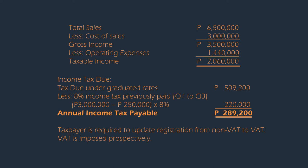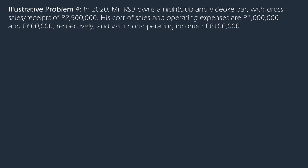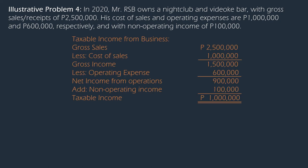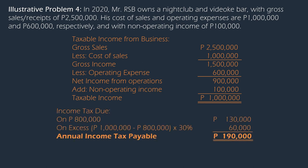Note that VAT shall be imposed prospectively. If the taxpayer is already VAT registered at the beginning of the year, then only the graduated tax rate shall be used in computing income tax due. For our last illustrative problem, the taxpayer cannot avail of the 8% income tax rate because of the peculiarity of the business, which is subject to other percentage tax under Section 125 at 18% based on gross receipts. Take note also of the nature of the $100,000 other income — in some cases this could be subject to final tax already and therefore excluded from computation, but for illustration's sake it was included.